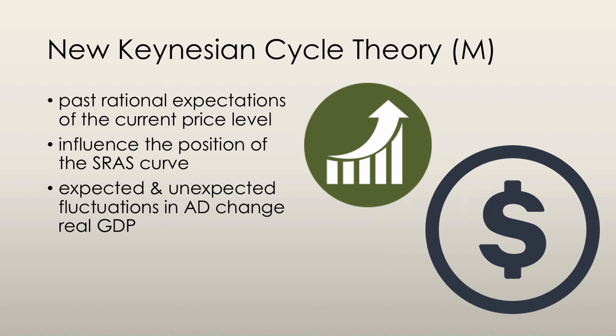The new Keynesian cycle theory, another mainstream business cycle theory, argues that today's wages were negotiated in the past, which means that past rational expectations of the current price level influence the money wage rate, and thus the position of the short-run aggregate supply curve. New Keynesian theorists believe that both unexpected and currently expected fluctuations in aggregate demand bring fluctuations in real GDP and potential GDP.